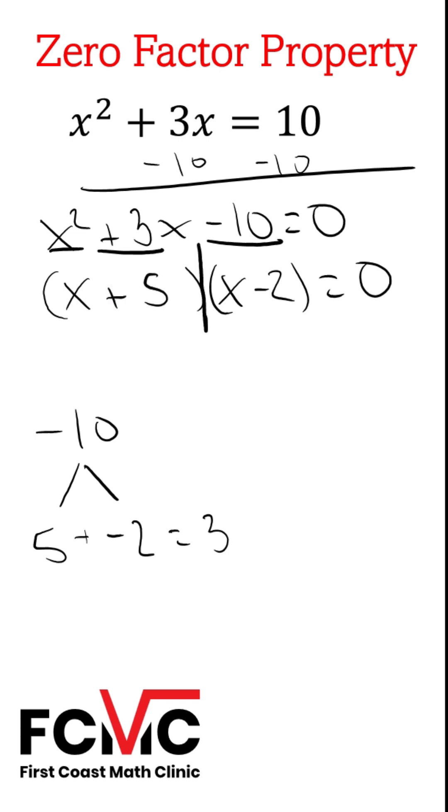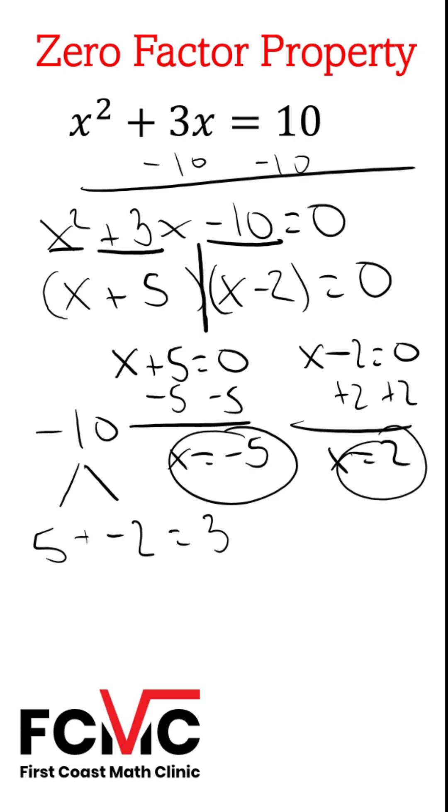We can factor them right where they're being multiplied, so we can set up x plus 5 equals zero, and x minus 2 equals zero. Subtract 5, we get x equals negative 5. Add 2, we get x equals positive 2. So our solutions here are going to be negative 5 and positive 2.